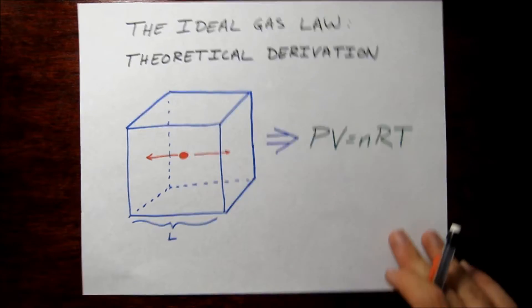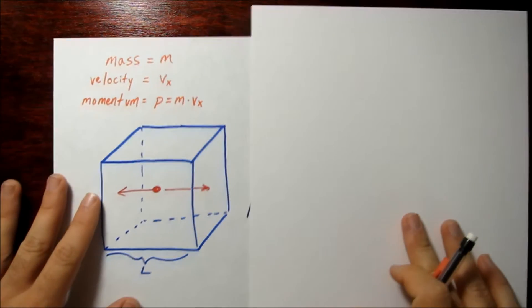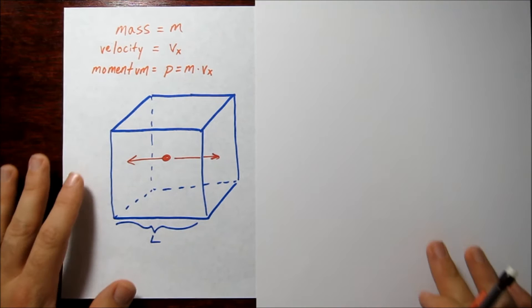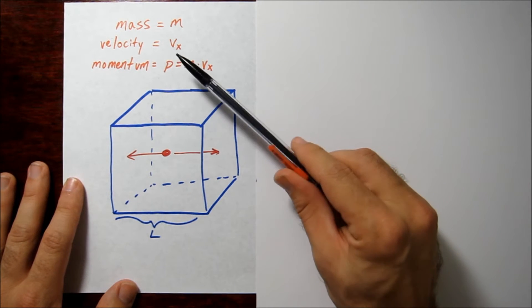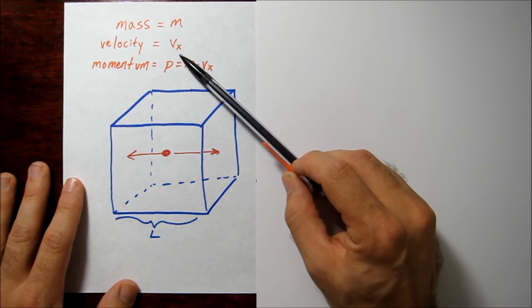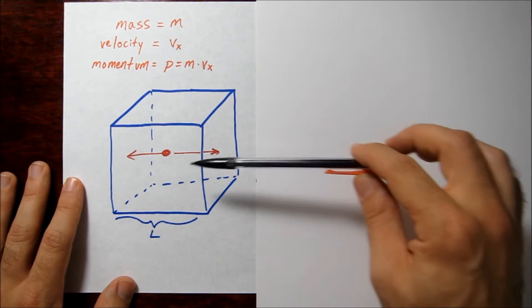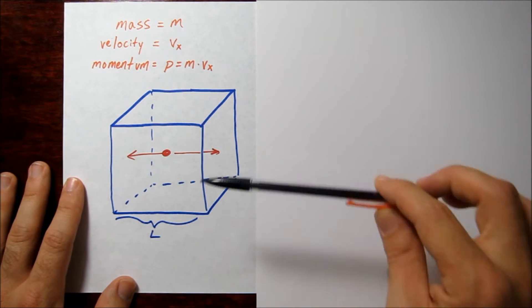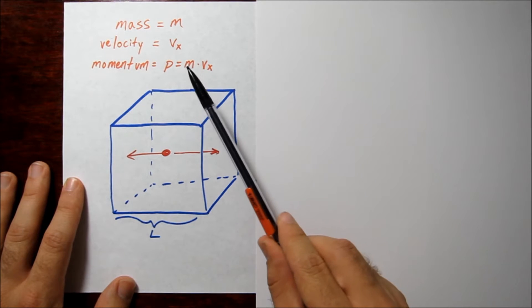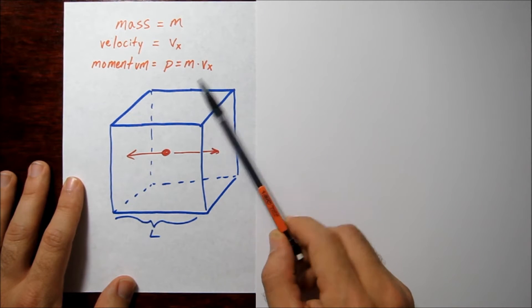Let's take a look at some of the properties of this particle. The particle is going to have mass m and velocity v sub x. The subscript x is there because first we're going to consider movement only in the x direction. This means that the particle has a momentum of m times v_x.